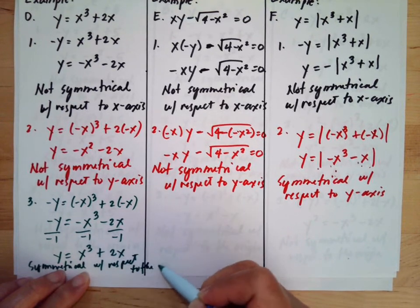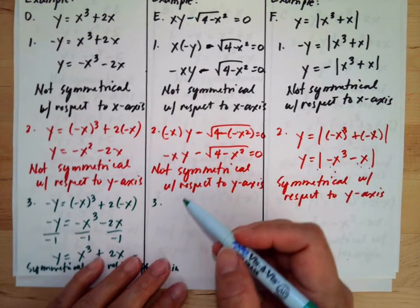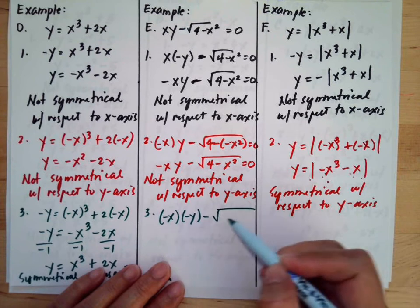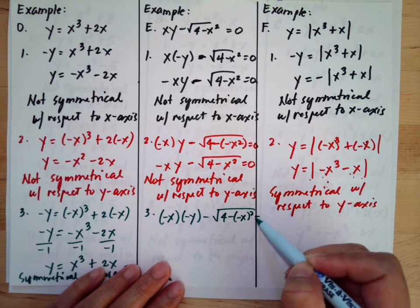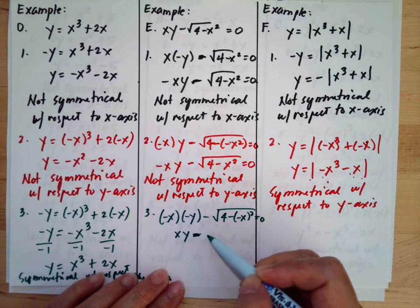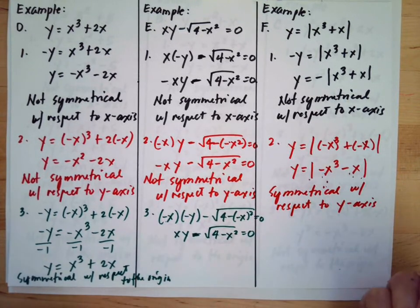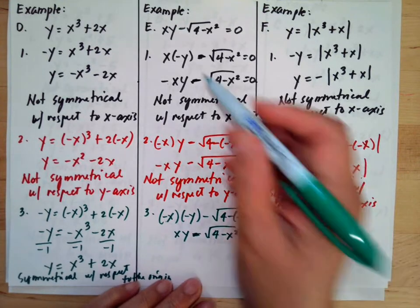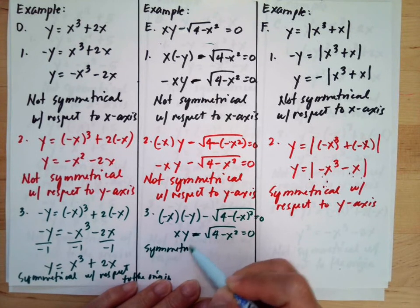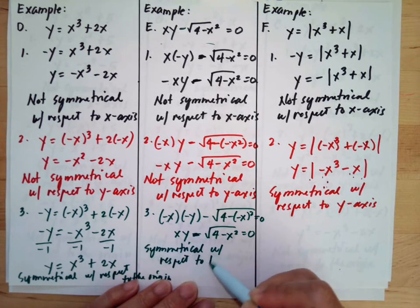For the next example, we substitute negative x and negative y: we get negative xy minus the square root of 4 minus negative x squared equals 0. Simplifying — negative multiplied by negative is positive — we get negative xy minus the square root of 4 minus x squared equals 0, which is the same as the original equation. So this one is symmetrical with respect to the origin.